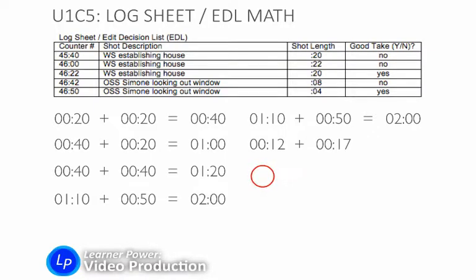12 seconds plus 17 seconds is 29 seconds. With a calculator you can do that.